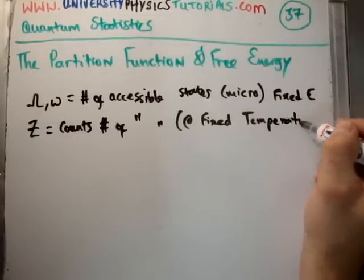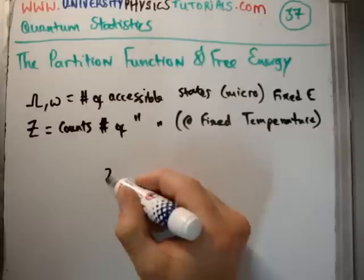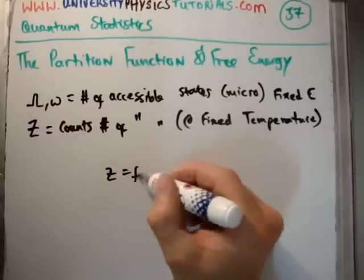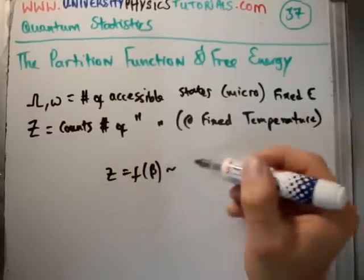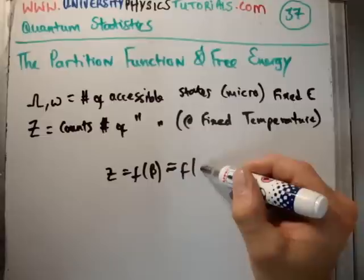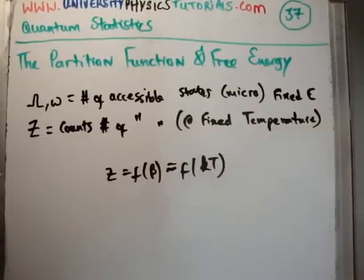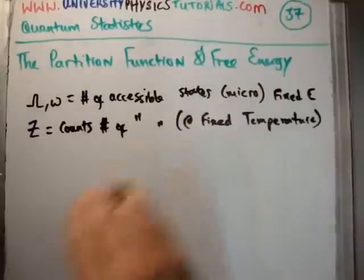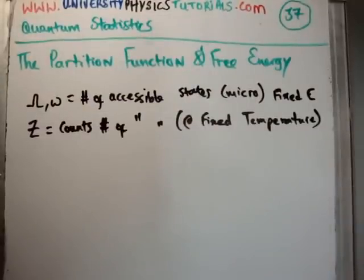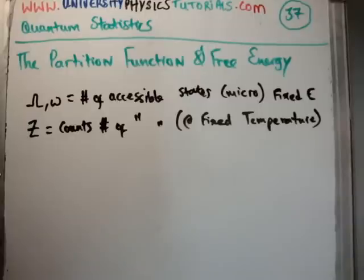Why is it at a fixed temperature? Well, remember Z is a function of beta, which means it's a function of kT, so it's a function of temperature. So it's always at a fixed temperature that we talk about the partition function. The multiplicity counts the number of microstates available at fixed energy, and the partition function counts the number of microstates accessible at fixed temperature.